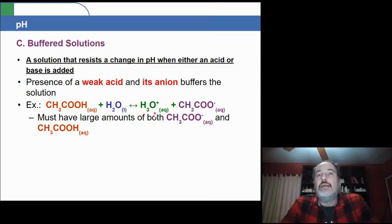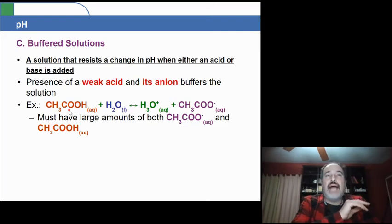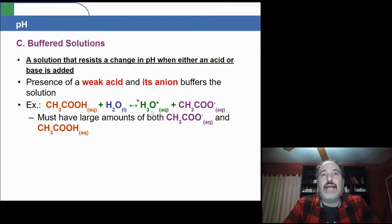Subsequently, let's say you add a base that takes away this acid and neutralizes this hydronium. Since you have a large amount of the acid, when hydronium disappears because it's neutralizing with the base, the acid will shift over and go in that direction and thereby maintain the same amount of hydronium.